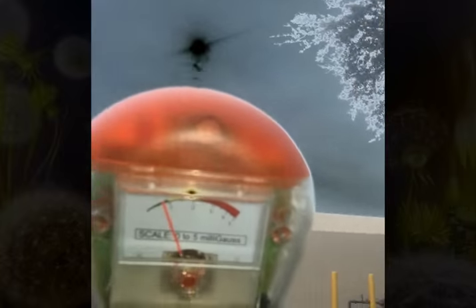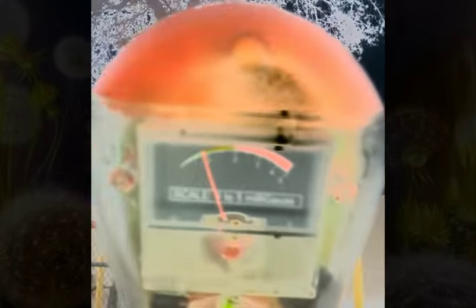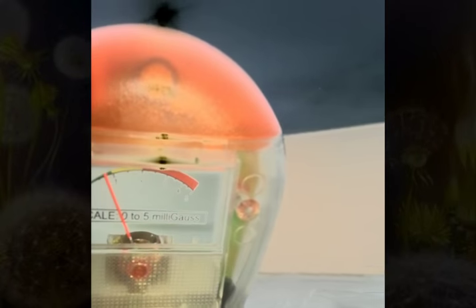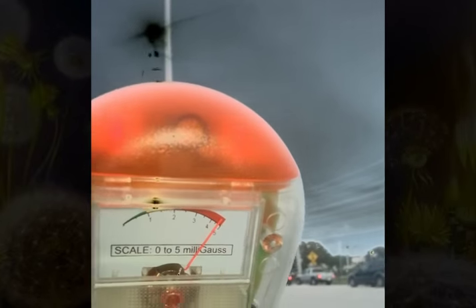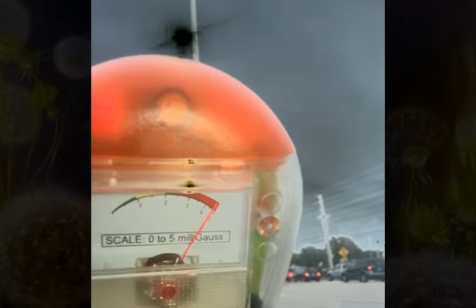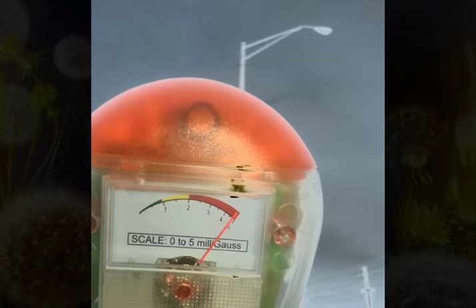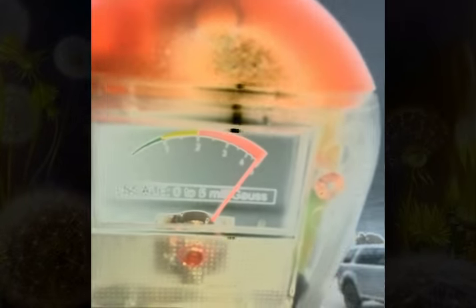What we're gonna do is I'm gonna be driving on the opposite side of those power lines and we're gonna see what is being picked up with the Gauss meter. Just bear with me, there's some traffic. As you see right now, I haven't even hit the power line section yet and I'm already going up where the danger level is to max.